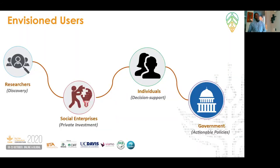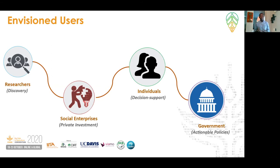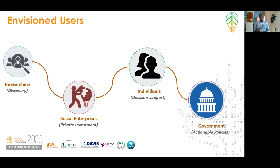This tool will be used by several users, including researchers who will develop testable hypotheses connecting the dots between nutritional issues and health outcomes. Social entrepreneurs will be able to use data from this platform to understand consumer preferences and gaps in consumer choices so that they can tailor their products. Individuals will be able to make decisions on what constitutes their nutritional deficiencies and how they could address them. Governments will be able to make actionable policies for the right people at the right time and the right place.